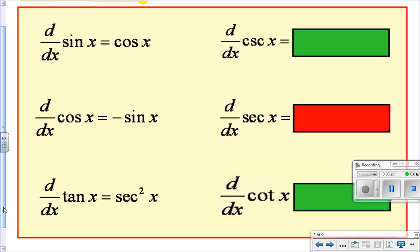Secant squared. What about cosecant? Negative cosecant times cotangent. That's a rough one. No, they don't give you these.